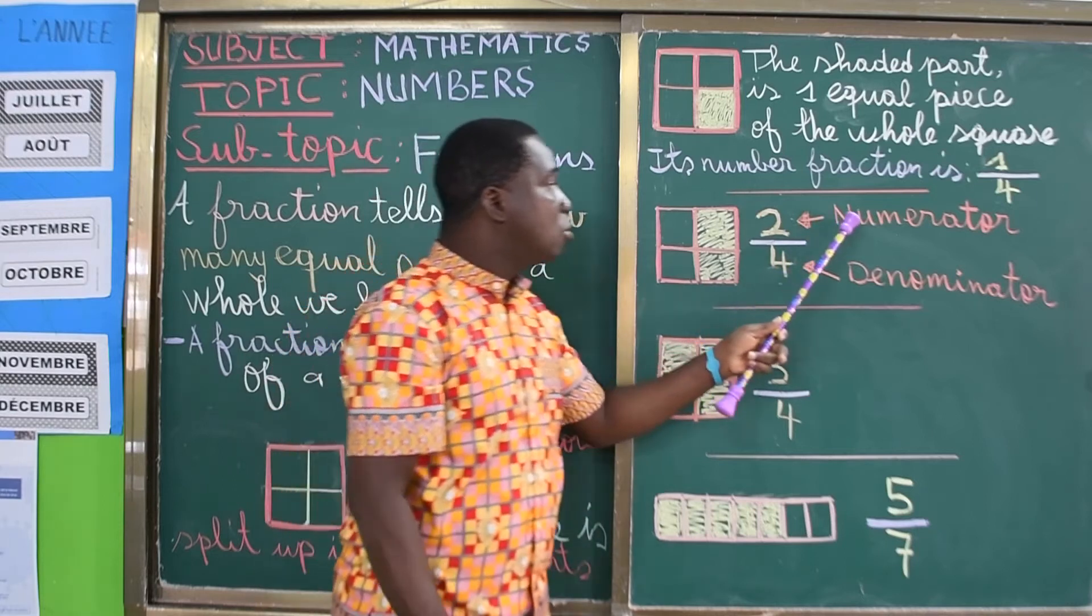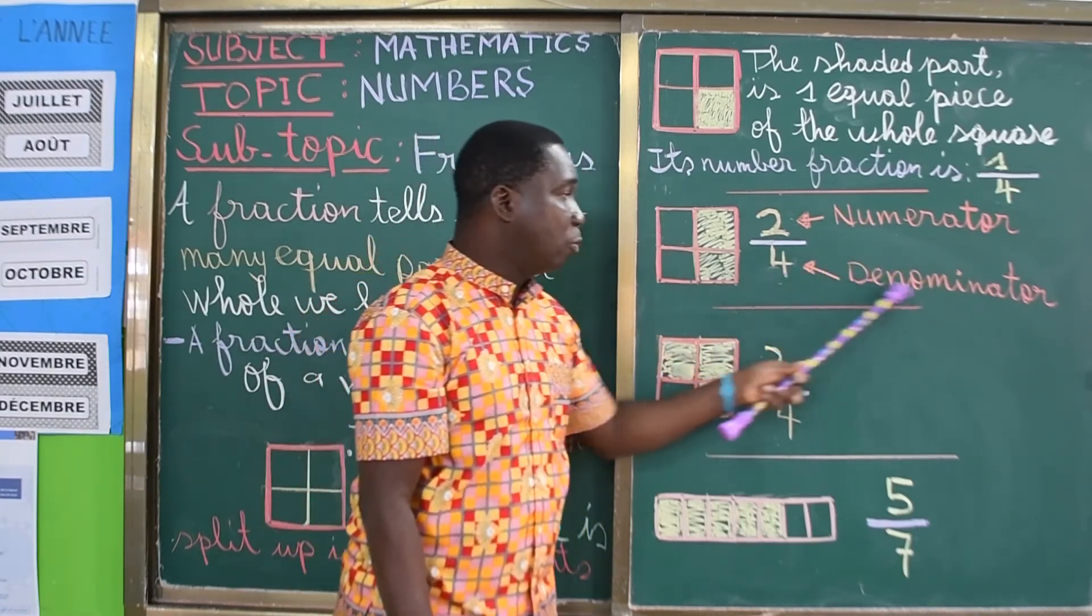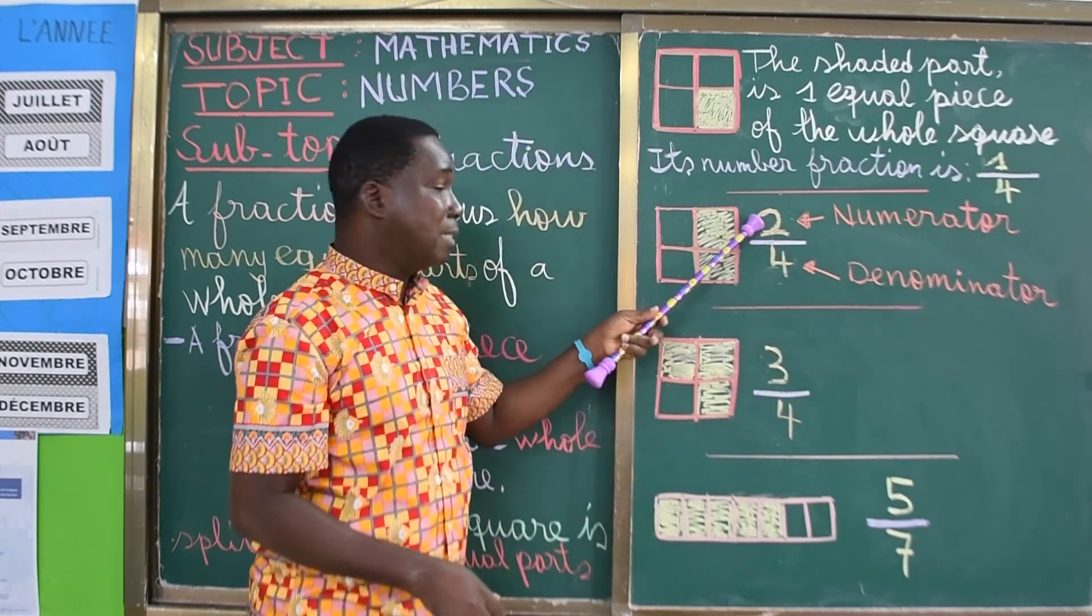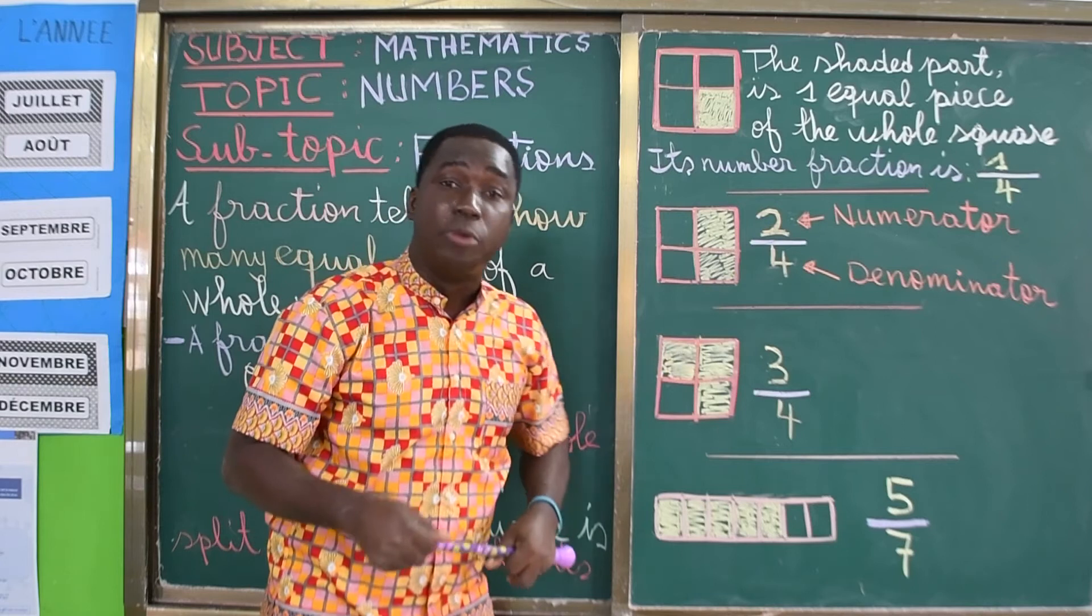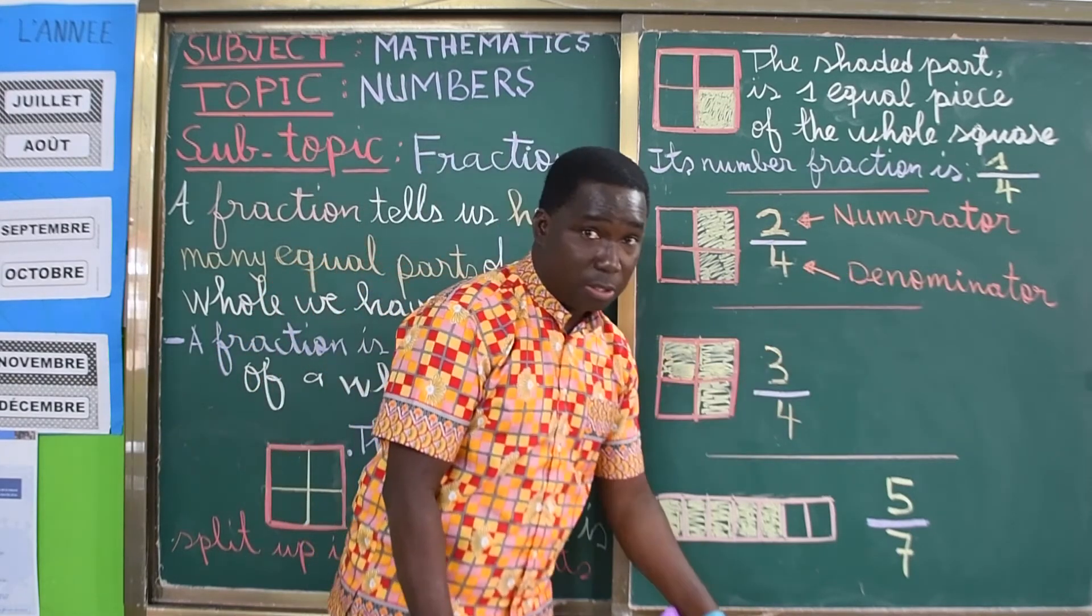So the two is called numerator, and the four is called denominator. So a fraction has two parts. The number up is called numerator, and the number down at the bottom is called denominator.